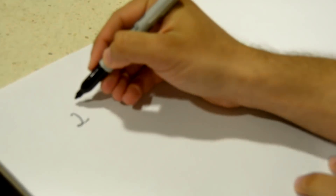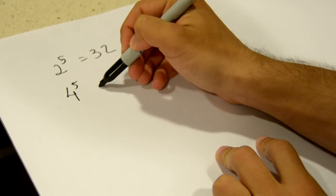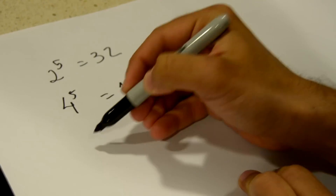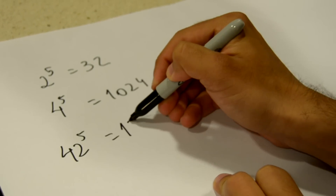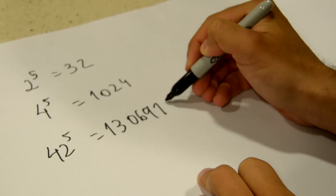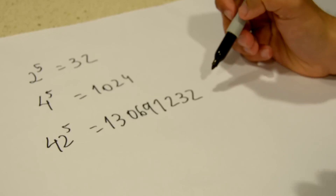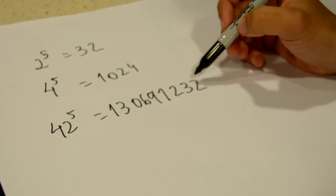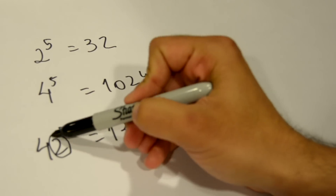Today's video is about a really curious property of natural numbers. If you take a natural number, let's say 2, and elevate it to the fifth power, you get 32. If you take 4 and elevate it to the fifth power, you get 1024. And if you have 42 and elevate it to the fifth power, you get 130,691,232. We start seeing a really interesting pattern here where the last digit of n to the fifth power is actually the same as the last digit of n.